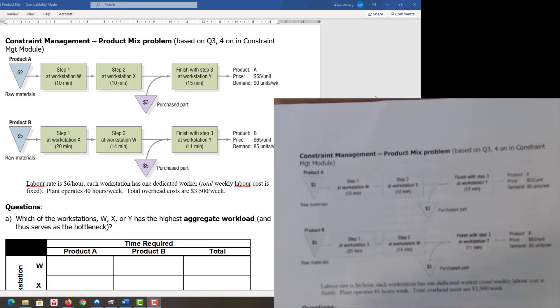Product B starts with five dollars of raw materials, goes to workstation X for 20 minutes, then to workstation W for 14 minutes, and finally to workstation Y where we add a five dollar purchase part. Product B is priced at 65 dollars per unit with forecasted demand of 85 units per week.